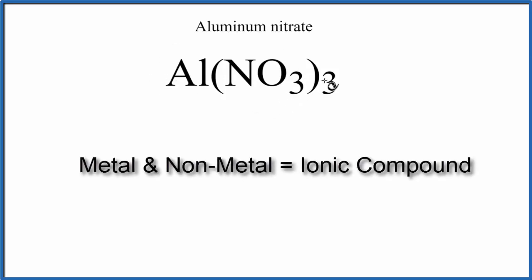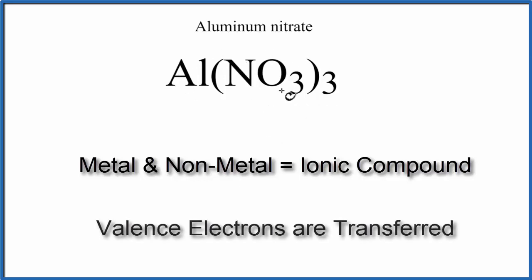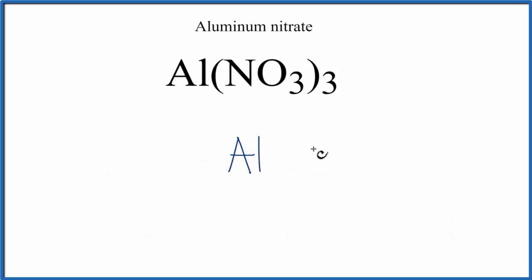Since aluminum is a metal and we have these non-metals, it's an ionic compound, and the metal is going to transfer electrons to the non-metals. So we'll put aluminum here in the center, and then we'll put three NO3s around it.